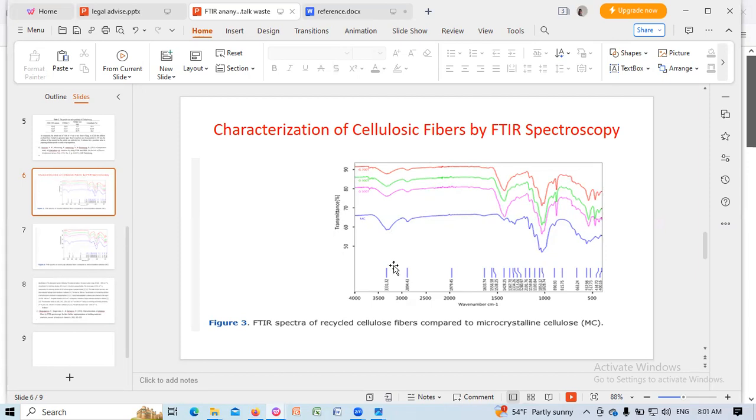At 3331 per cm, this peak is stretching vibration of the hydroxyl group in polysaccharides. And another peak near that, we see at 2894 per cm. This is the C-H stretching vibration of hydrocarbon constituents in polysaccharides.